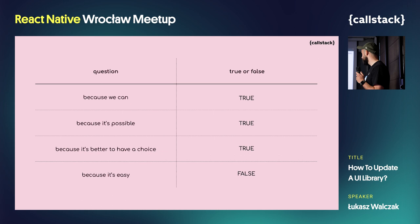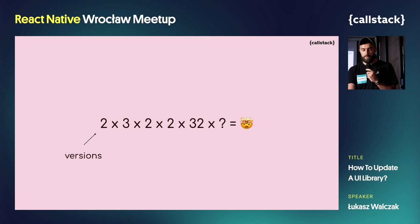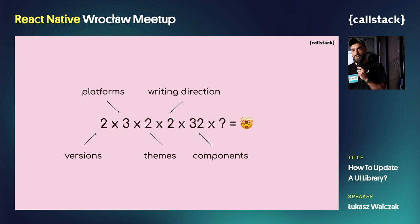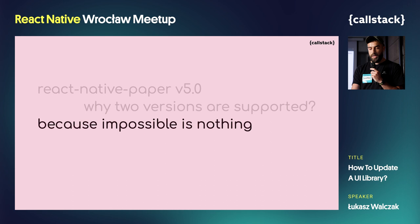Because it's easy — wait, what? It's definitely not easy. Easy can be two multiplied by two. But two versions multiplied by three platforms, multiplied by two themes, multiplied by two writing directions (left-to-right and right-to-left), multiplied by the number of components and their variants — that cannot be easy, especially when it comes to testing all possible scenarios. But don't worry, it's fine. Impossible is nothing, or the sky is the limit, so we managed to do that.